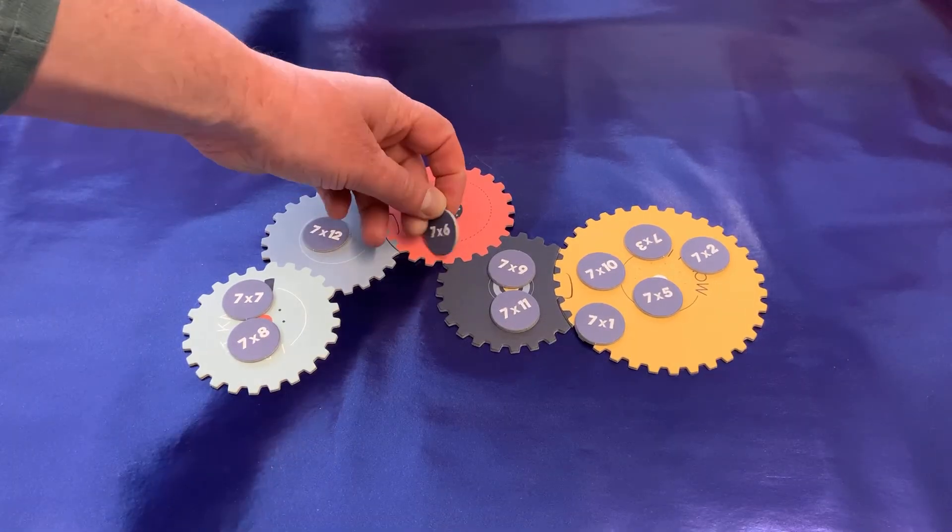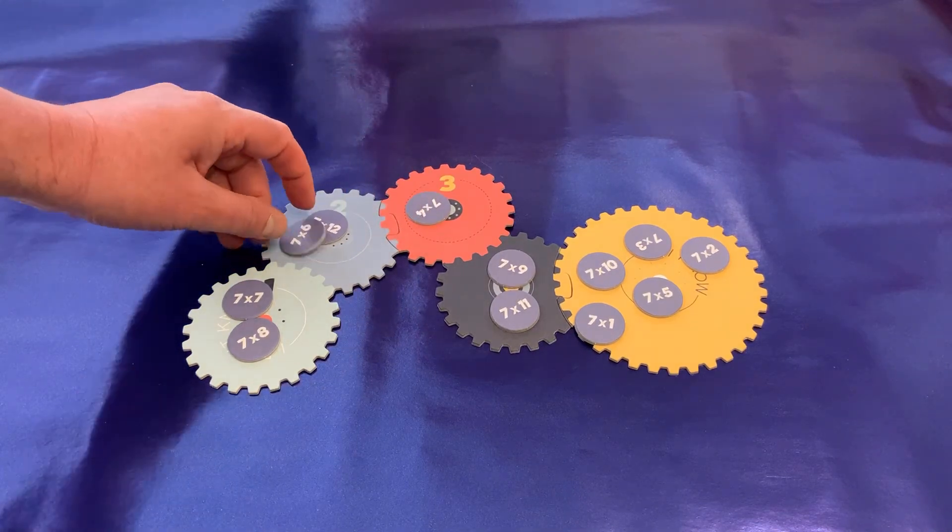If you're not sure and you get something wrong, you can always move it back a cog so you can practice it more next time.